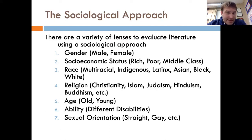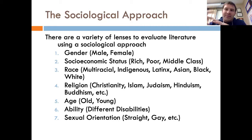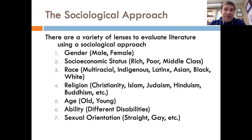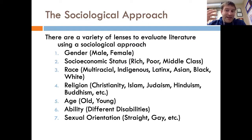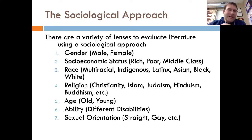Then we have race. You have multiracial, indigenous, Latinx, Asian, Black, White — you name it. What is the text saying about these different races? And once again, if a race is not present in the text, what is that trying to tell us? Sometimes there is a social understanding of why a race is included or excluded. But sometimes they're being excluded intentionally — so that's something to keep in mind.